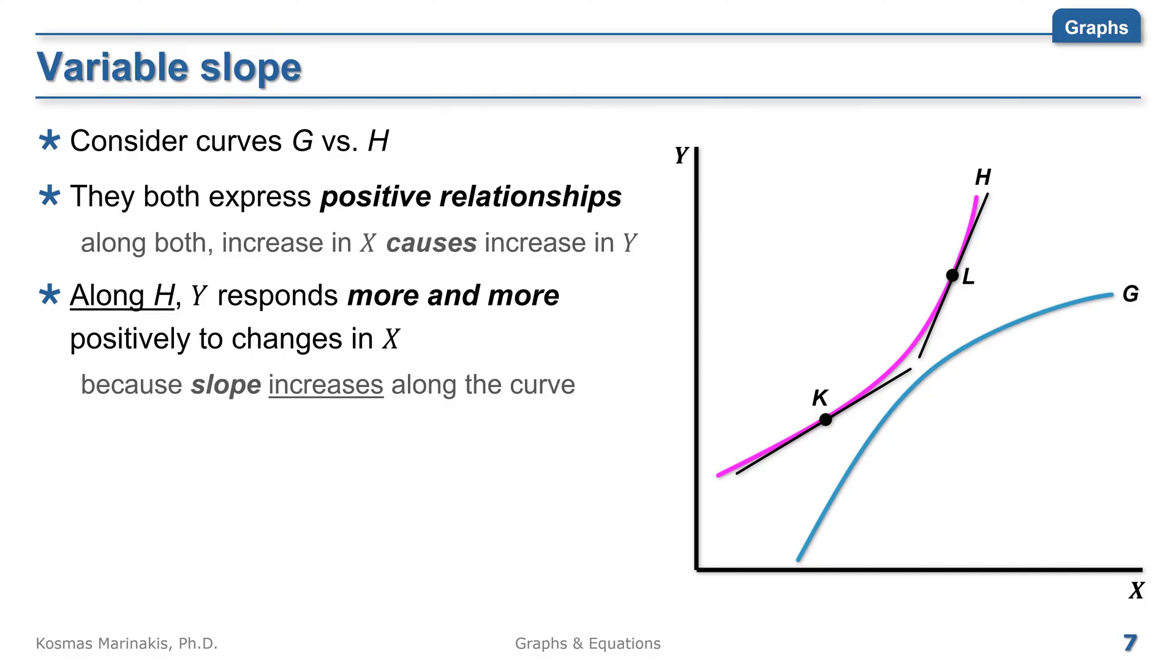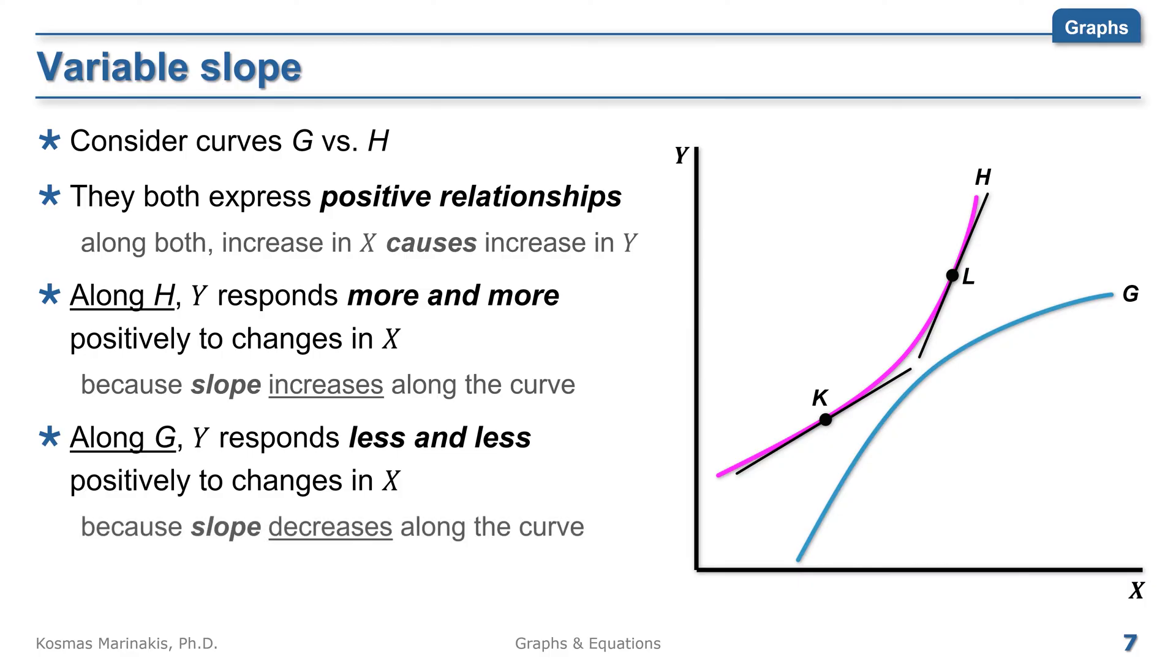On the contrary, along curve G, y responds progressively less to x because the slope decreases along the curve. Again, compare the slope at point M with the slope at point N. A good way to remember this is that large slope for a curve means steep and small slope means whatever the antonym of steep is.